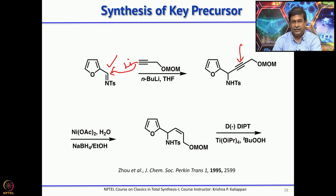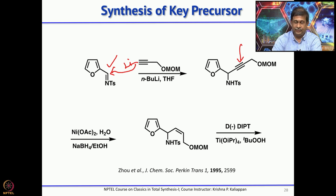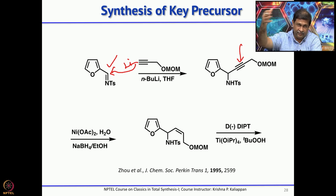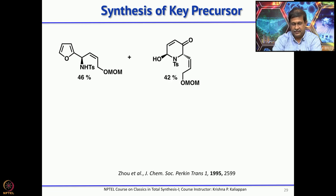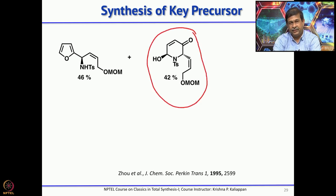Using diisopropyl tartrate, titanium tetraisopropoxide, and tert-butyl hydroperoxide — normally used for Sharpless asymmetric epoxidation and kinetic resolution — along with molecular sieves and calcium hydride, the kinetic resolution was performed. It not only resolves the substrate but also undergoes Achmatowicz rearrangement. The Achmatowicz rearrangement product is the compound he further carried forward for the synthesis of swainsonine.